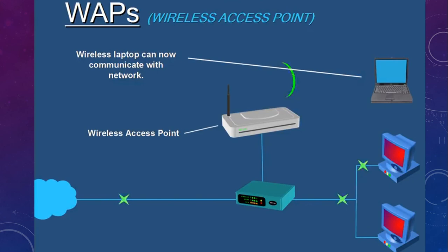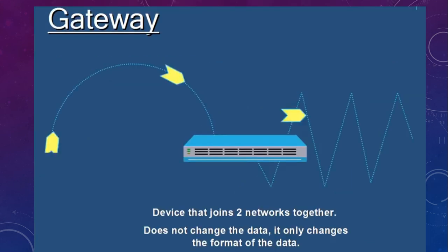Then we have wireless access points. Suppose we have a network and to this network we have a wireless access point connected through a wire. If we want to access our network wirelessly from a laptop, we need a wireless access point in place so that it can provide access to the network.